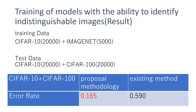Finally, we introduce the training results for models with the ability to identify indistinguishable images. We used CIFAR-10 and ImageNet as training data, and CIFAR-10 and CIFAR-100 as test data. Our proposed method's error rate is 0.165, while the existing method's error rate is 0.590. We can significantly improve the error rate with our proposed approach.